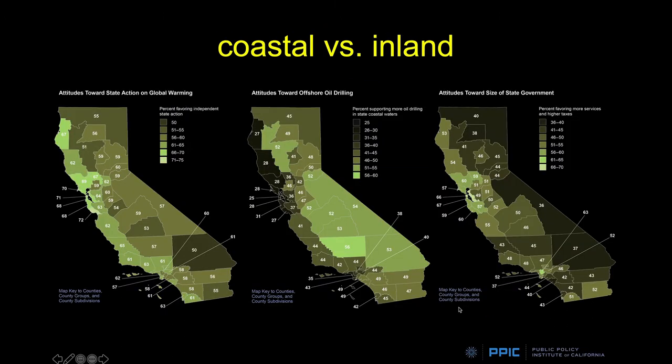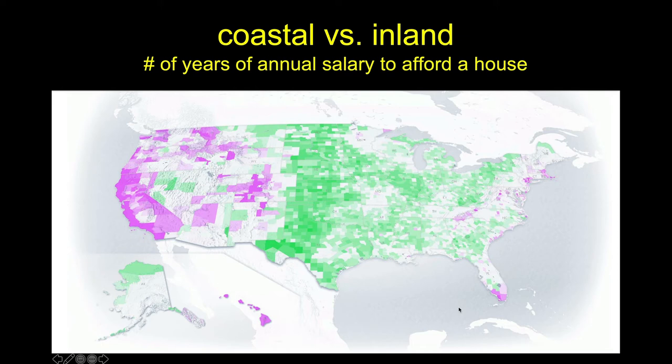This coastal versus inland pattern is very robust and consistent however we slice the population. Polling data from the Public Policy Institute shows the same thing. You see a general pattern — whether it's belief in climate change, offshore oil drilling policy, or the size of government — relatively consistent differences between coastal and inland regions. And we can see this pattern not just in California, but extending around the world.